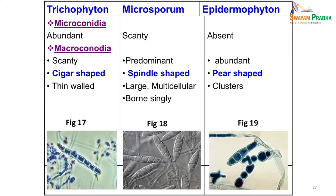For microscopy you make a lactophenol cotton blue mount, which stains while preserving the fungi. In Trichophyton you see abundant small microconidia and very few or scanty cigar-shaped thin-walled macroconidia. In Microsporum, microconidia are scanty but you predominantly see spindle-shaped large multicellular macroconidia born singly. In Epidermophyton, microconidia are absolutely absent and you see abundant pear-shaped or grape-like clusters of macroconidia. On the basis of these microscopic appearances and gross colony appearance you can identify the different genera.